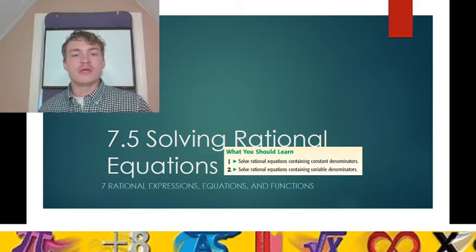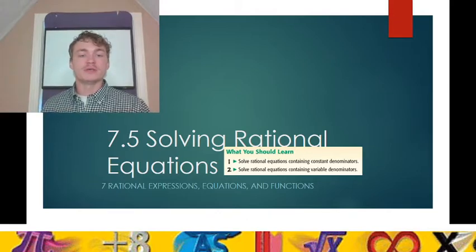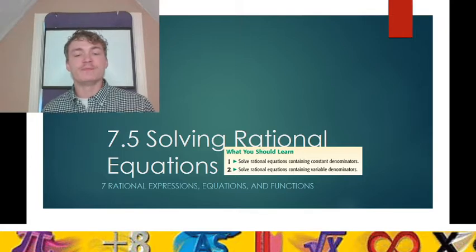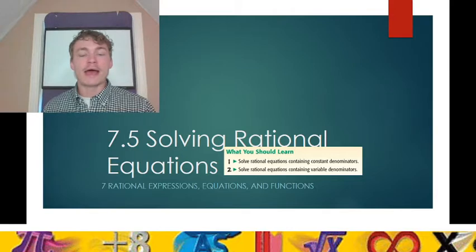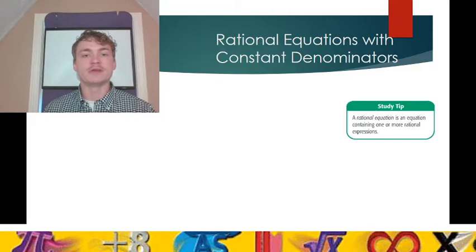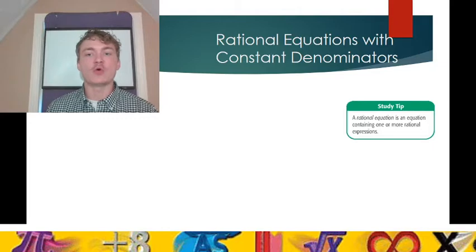Thus, our rational equation will become a much more approachable, solvable equation — some sort of polynomial equation, whether that be a linear equation, a quadratic equation, a cubic equation, etc. By multiplying each side by the LCD, we will have an equivalent equation that is much easier to solve. To solve rational equations with constant denominators — in other words, denominators that are real numbers — remember that a rational equation is an equation containing one or more rational expressions.